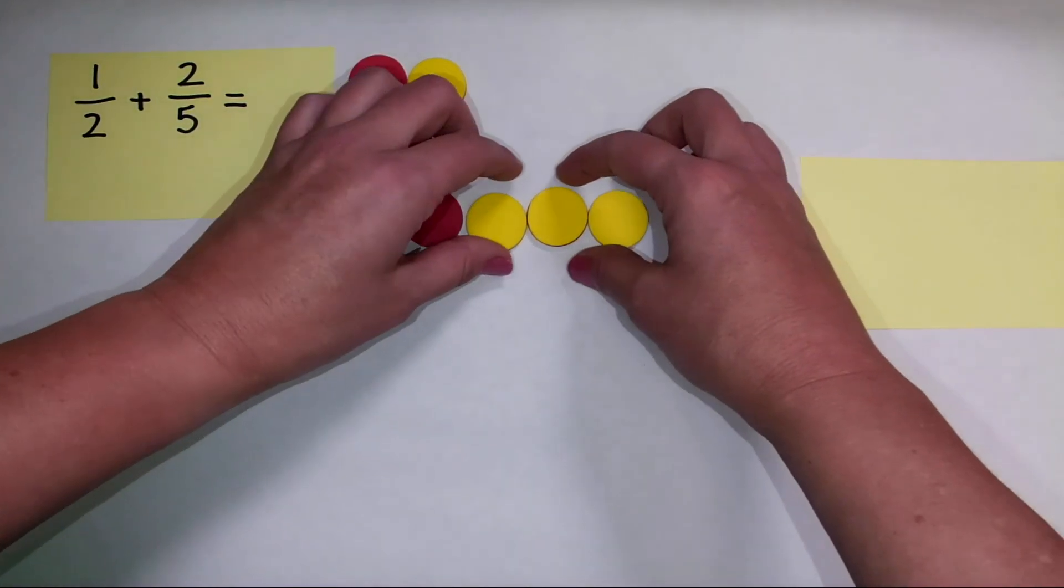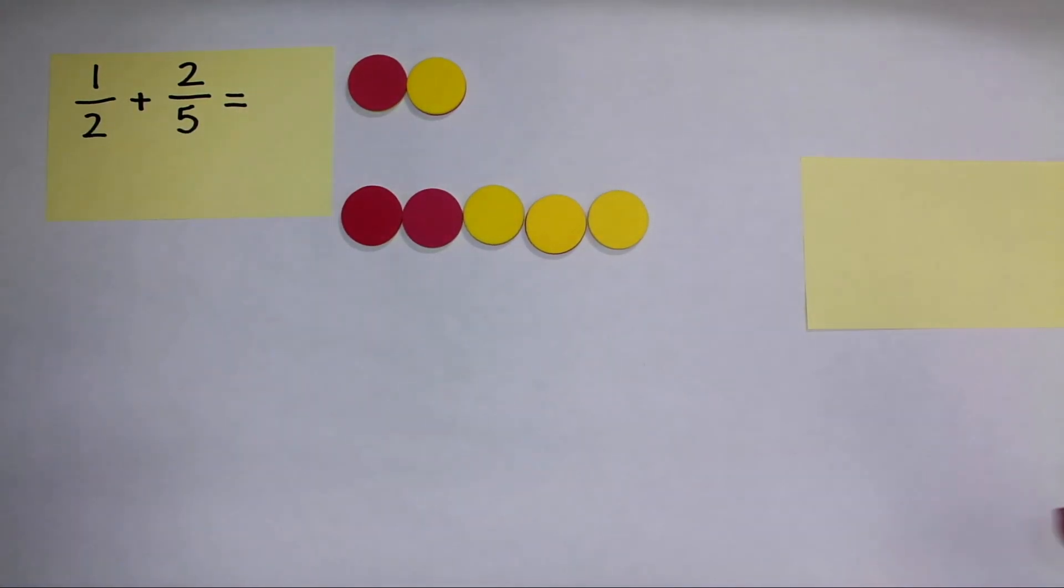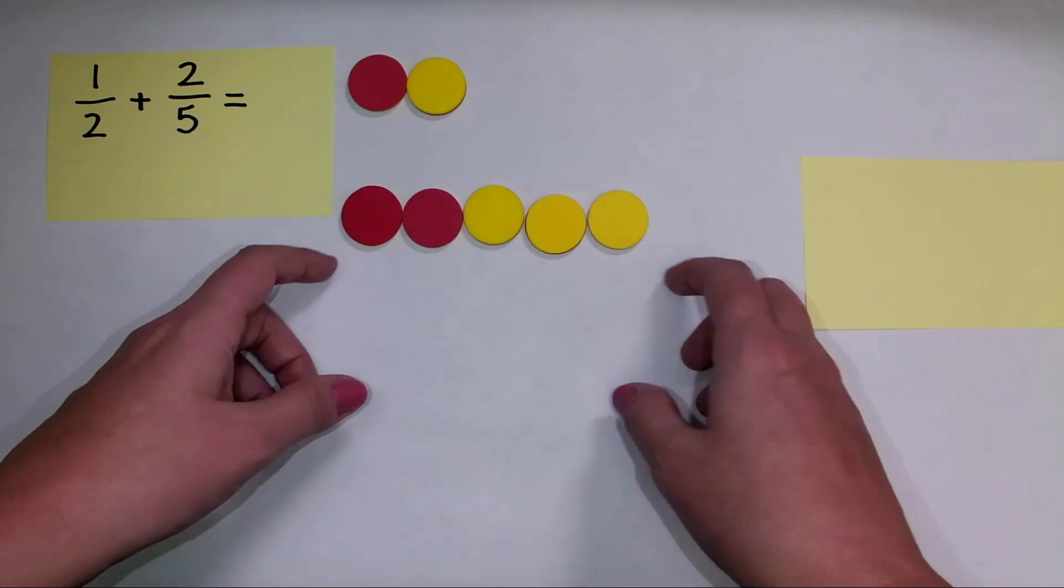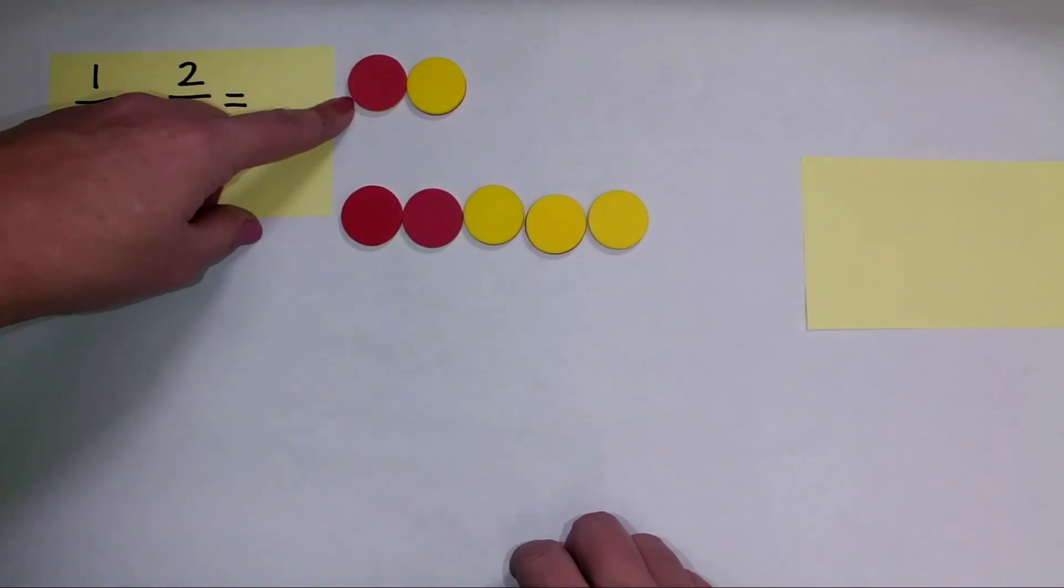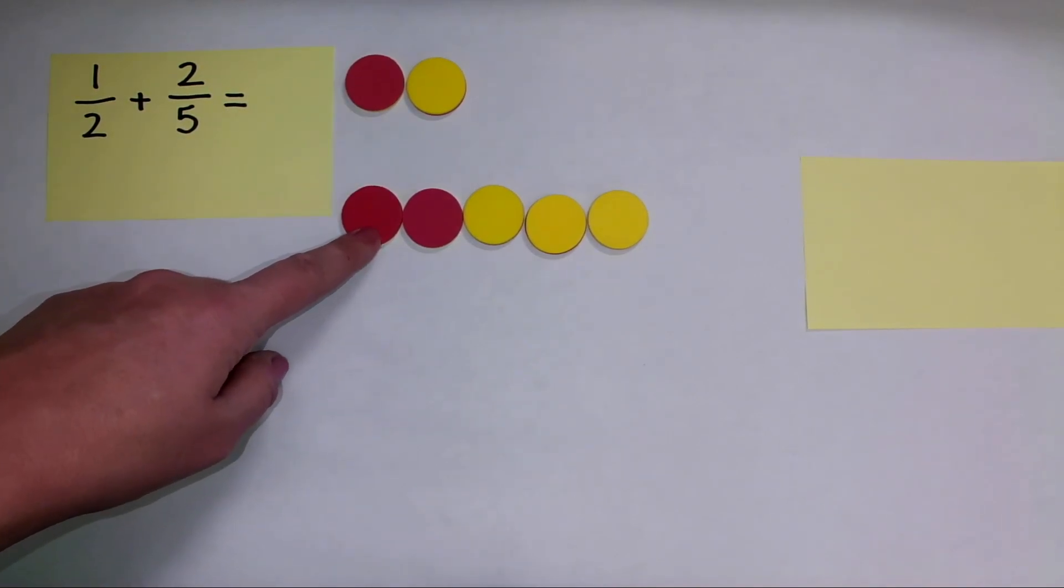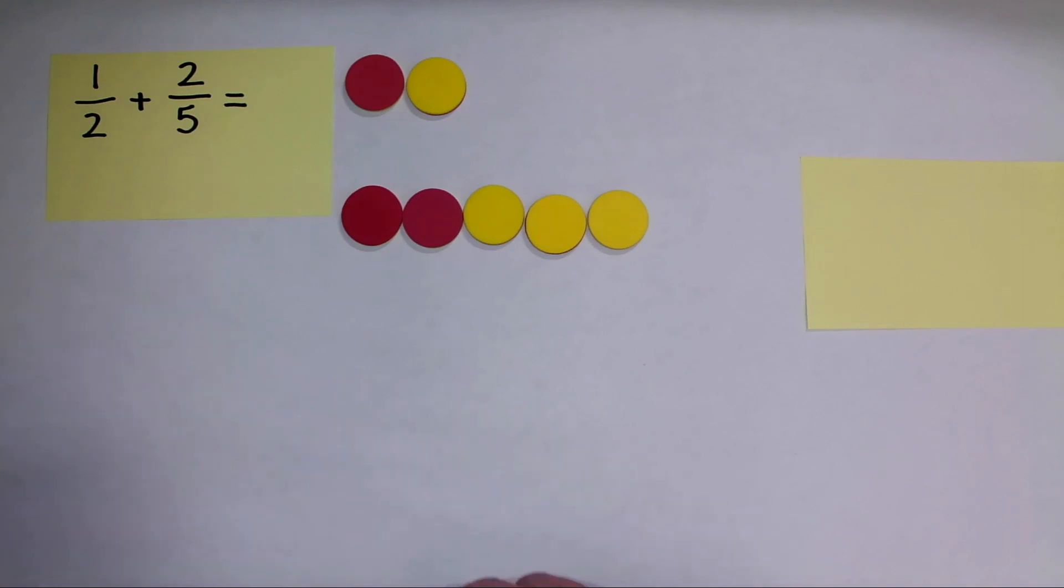I have to think about adding parts of the fraction that have the same value or the same size. And right now each of these counters has a value of one half, and each of these counters has a value of one fifth. So I can't easily add those together. So that's where we have to find common denominators.